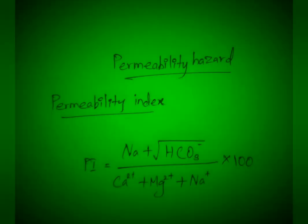Permeability hazard. Permeability is affected not only by high sodium but also by carbonate and bicarbonate content in water. It is calculated as the permeability index. If the value exceeds 65, the water is considered unsuitable for irrigation.